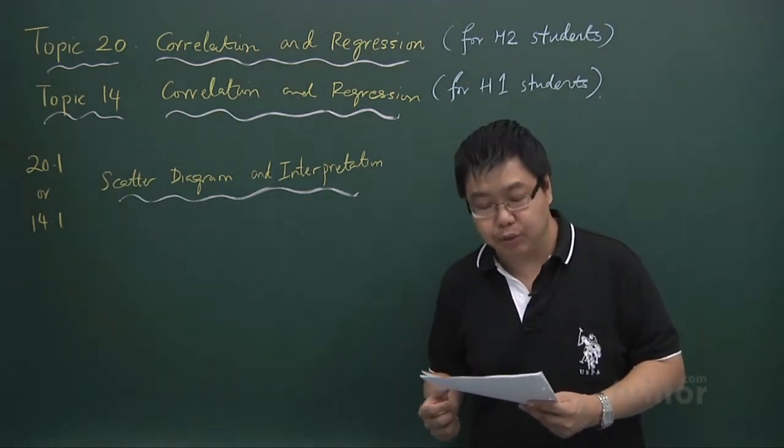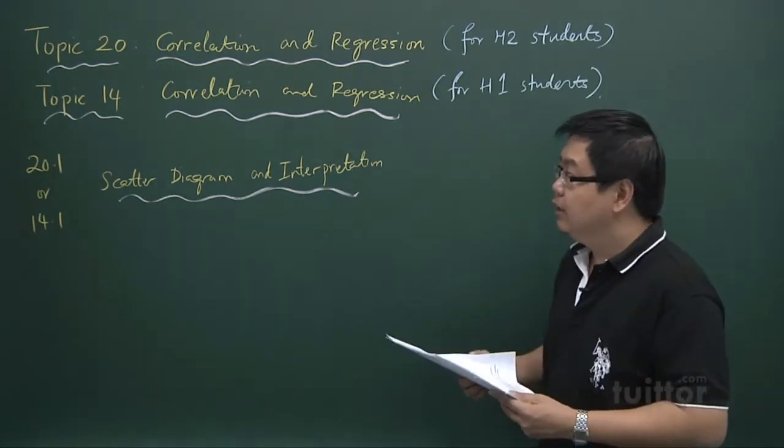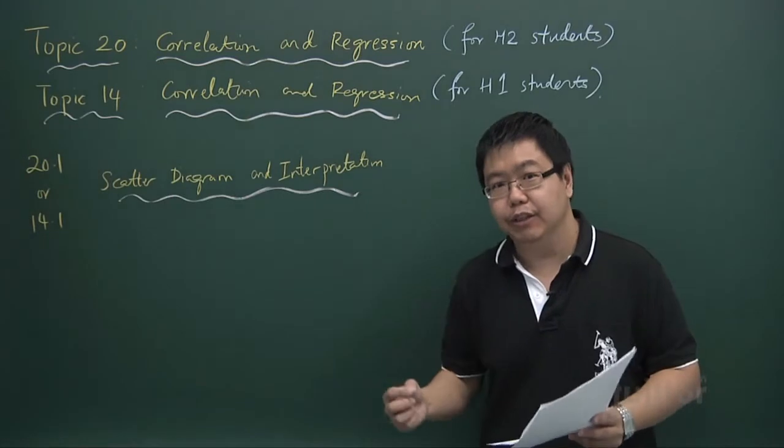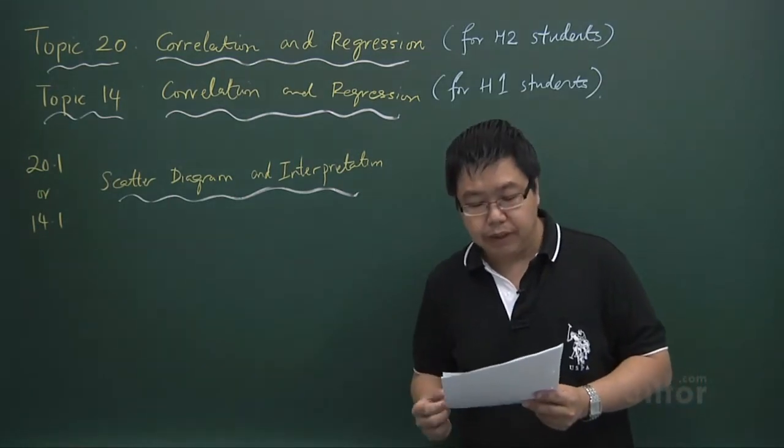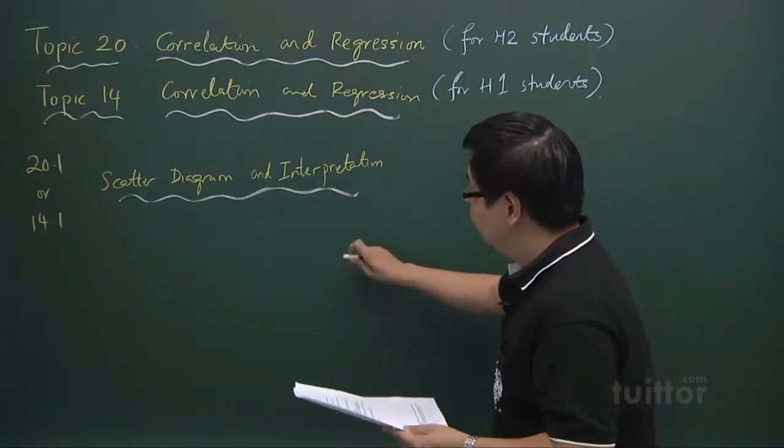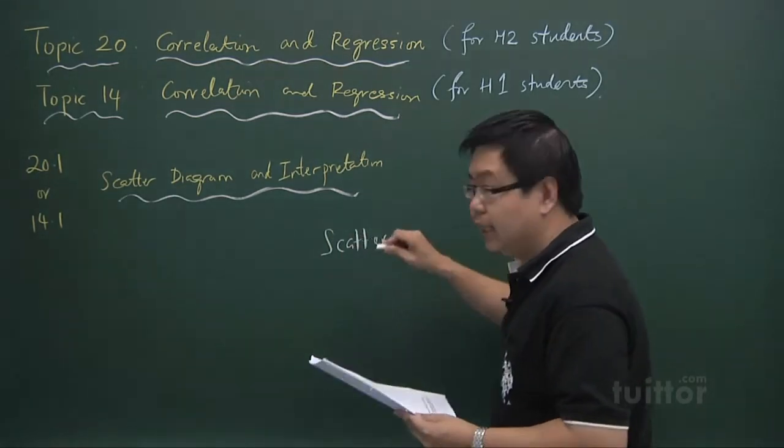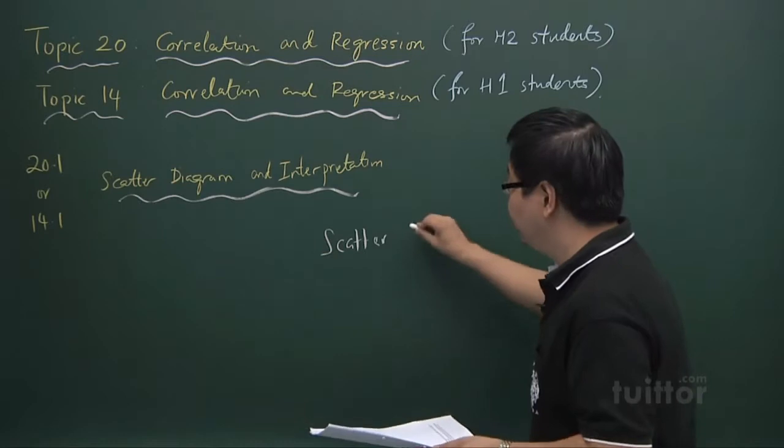And in this chapter, chapter 20 or chapter 14 for H1 students, we are looking at some kind of interaction between two variables. Scatter diagram is one of the useful concepts that allows us to study the relationship between two variables.